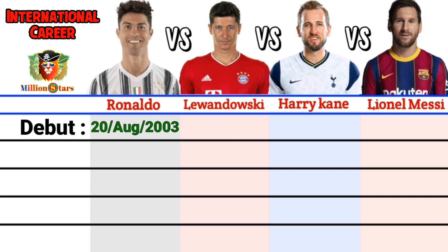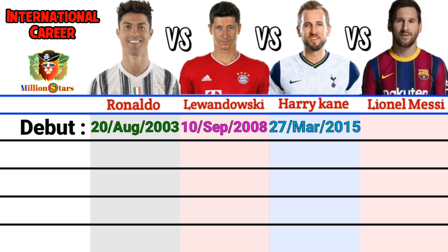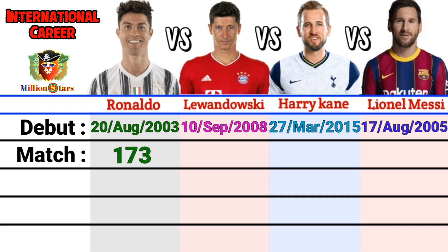International career comparison. Debut: Ronaldo August 20, 2003 vs Kyrgyzstan; Lewandowski September 10, 2008 vs San Marino; Harry Kane March 27, 2015 vs Latvia; Lionel Messi August 17, 2005 vs Hungary. International matches: Ronaldo 173, Lewandowski 118, Harry Kane 53, Lionel Messi 142.